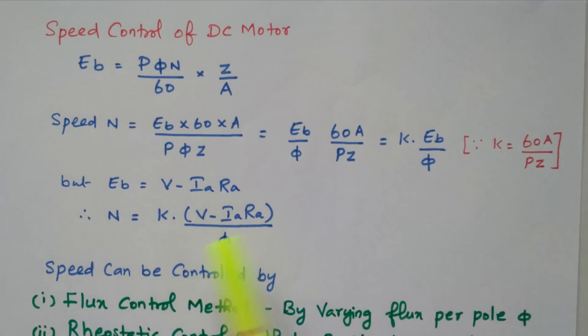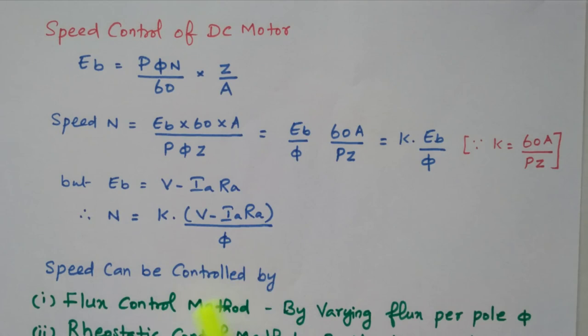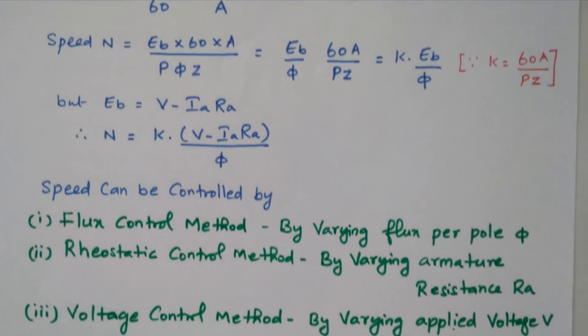The back EMF is given as V minus IA Ra. Substituting this value, N equal to K into (V minus IA Ra) divided by phi. Now it is clear that speed depends upon three parameters: applied voltage, flux, and armature resistance drop.